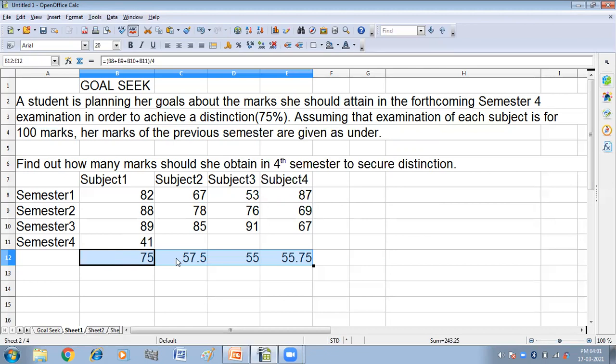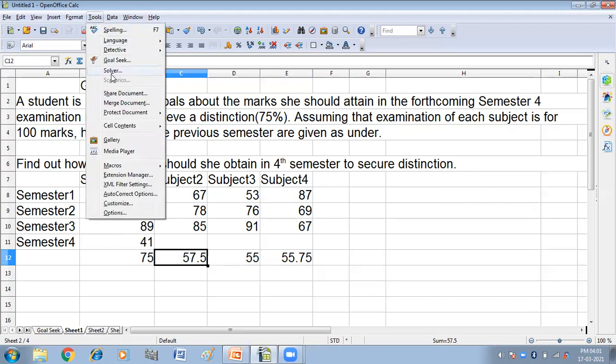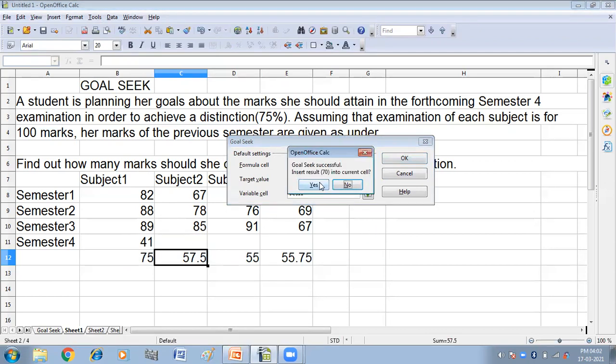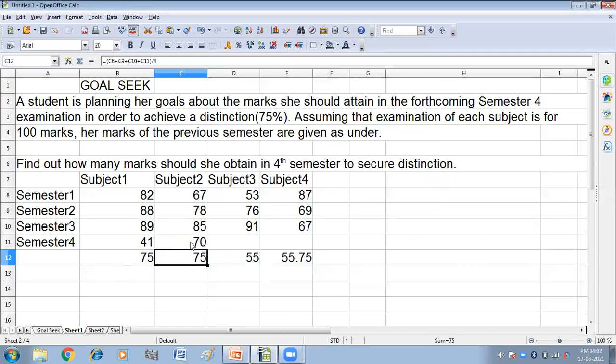Again for the other cell we can perform the same function. Click here, click on the Tools and then Goal Seek option. My target value is 75 and the variable cell is this. Click on OK. Yes, so in semester 4 I have got 70 marks to get 75 percent.